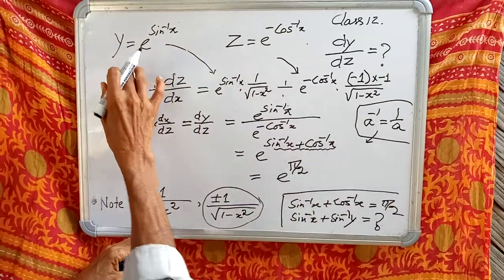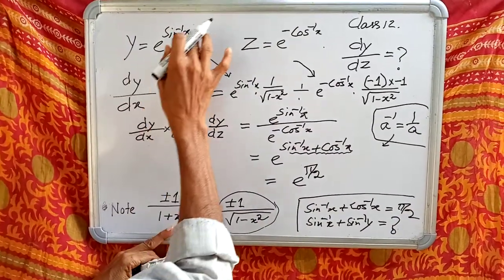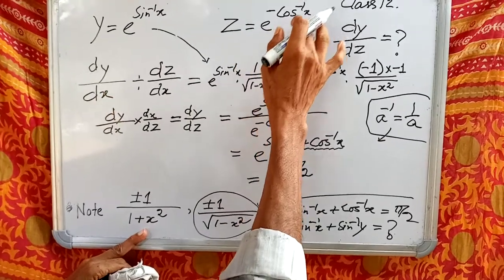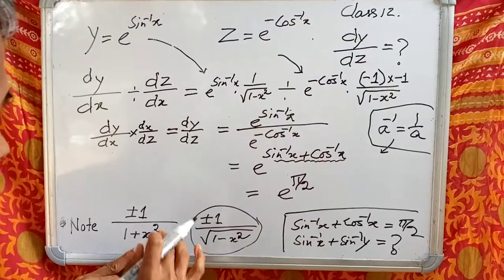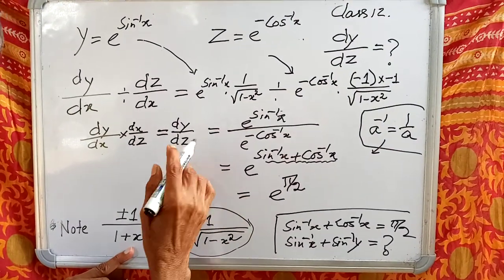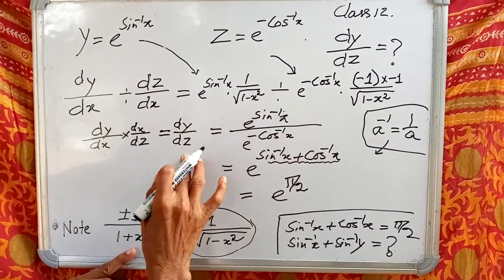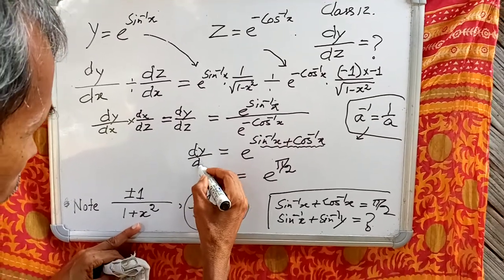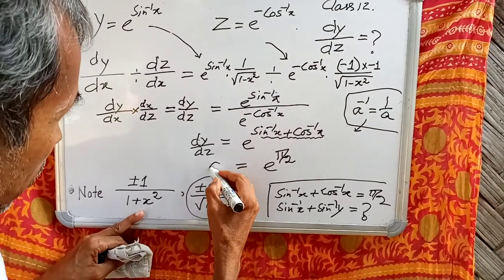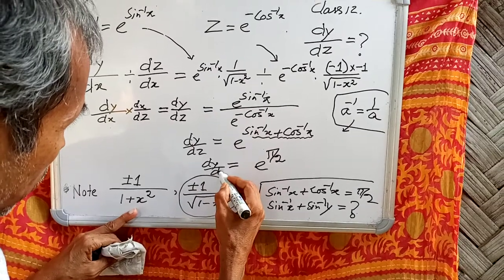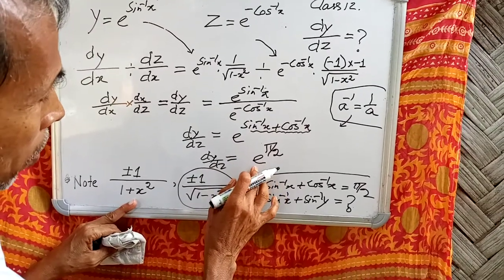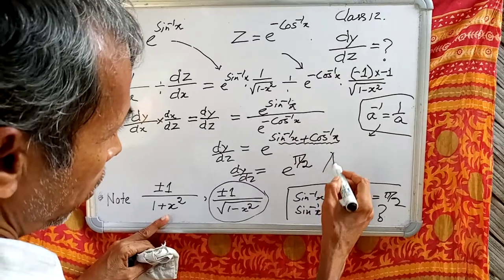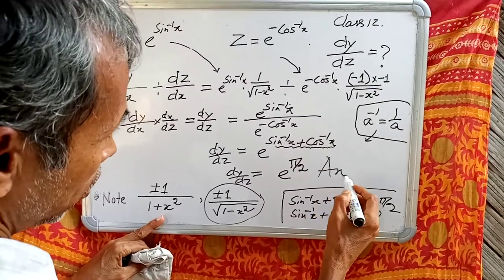Now, given y equal to e to the power sin inverse x and z equal to e to the power minus cos inverse x, therefore dy by dz equals e to the power pi by 2. Most important. Namaskar.